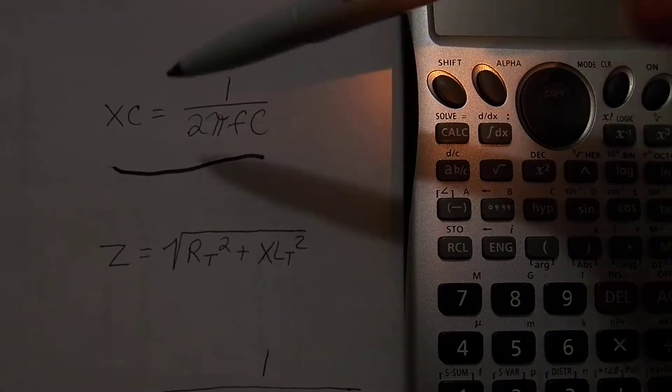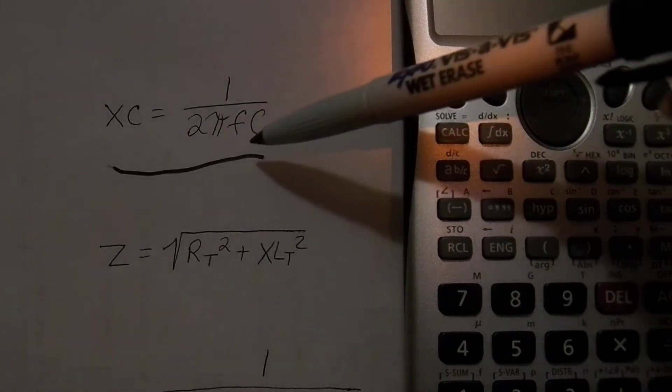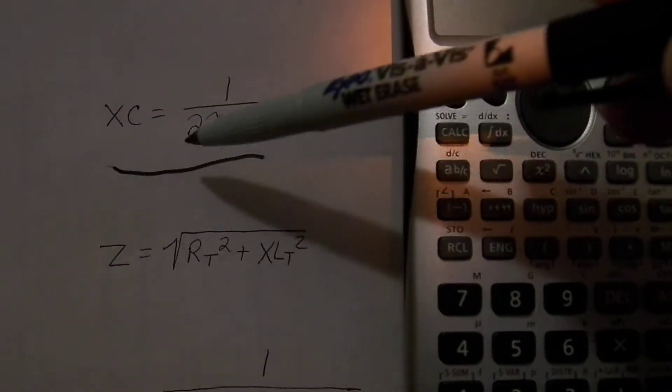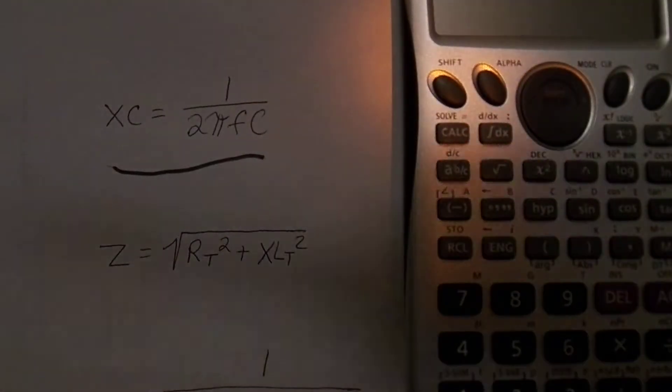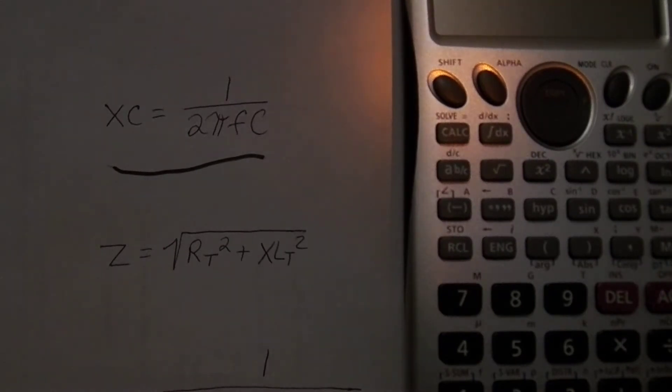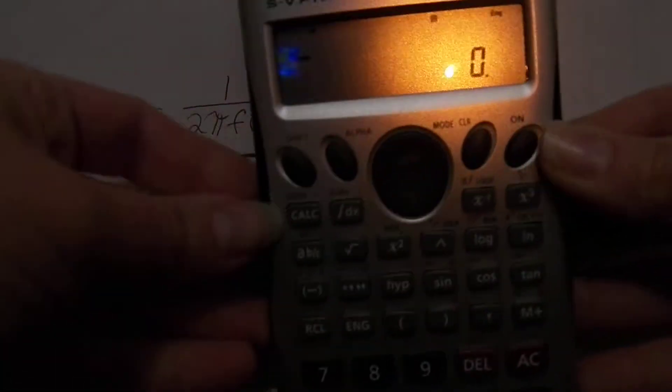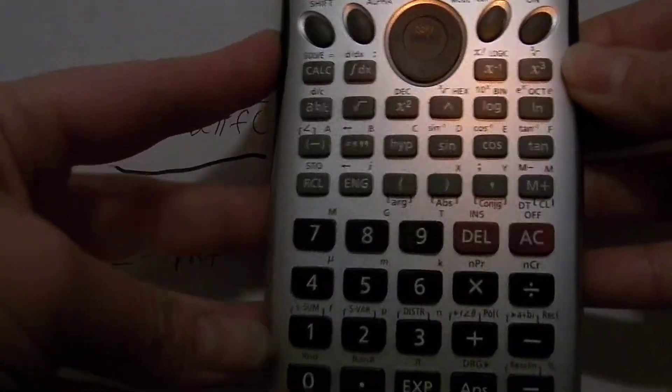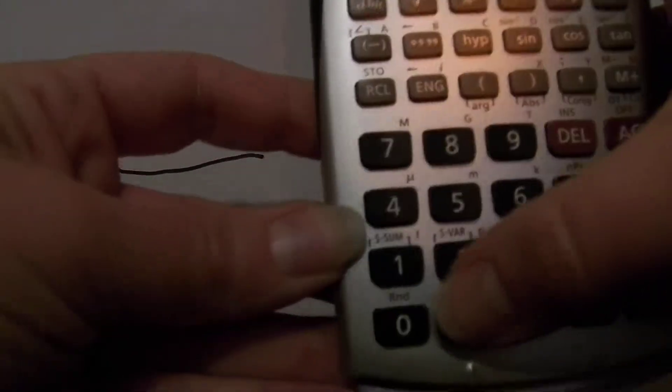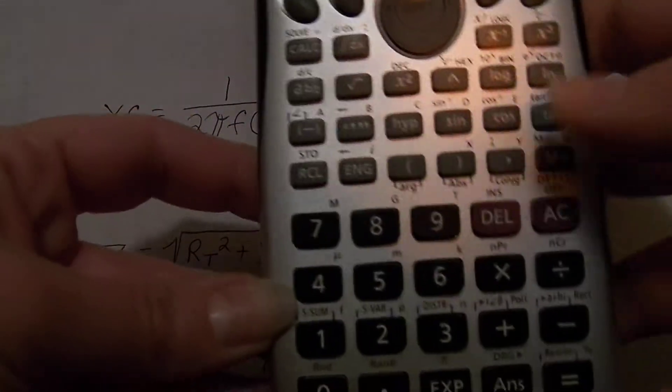So 2π or 6.28, either one that you want to put on your calculator. So if you were going to put 6.28, you would simply turn your calculator on and then you would put in 6.28, and then you would times that by your frequency.